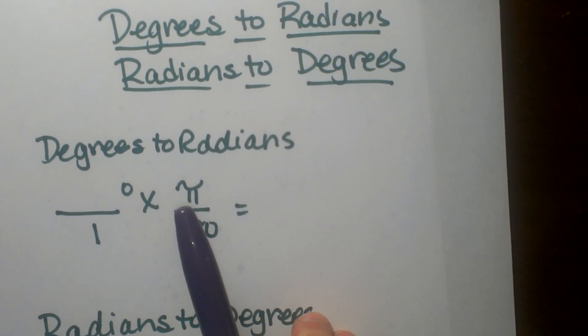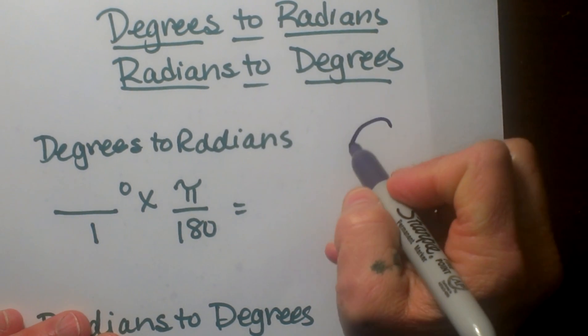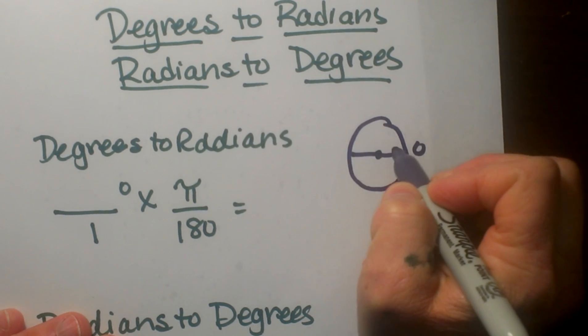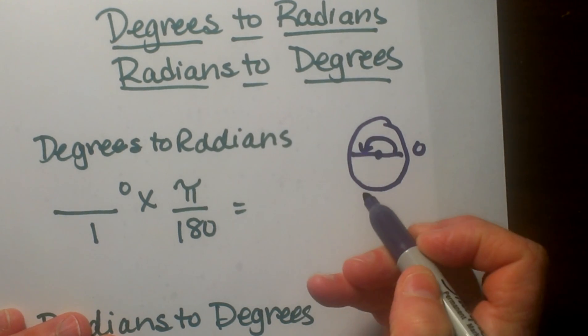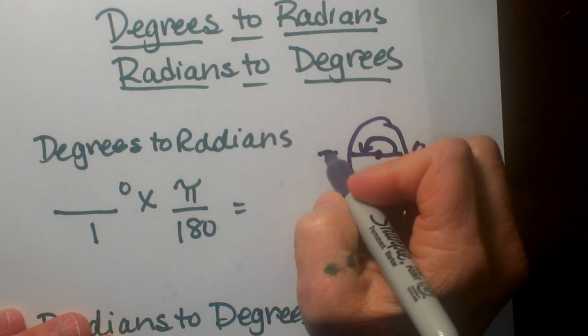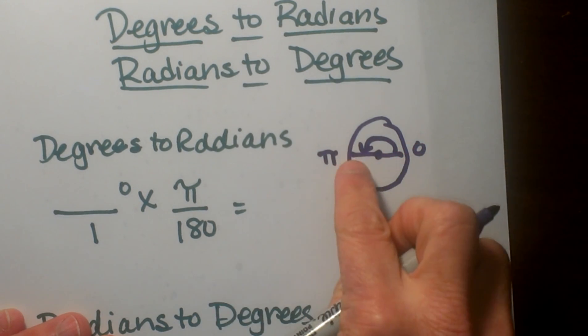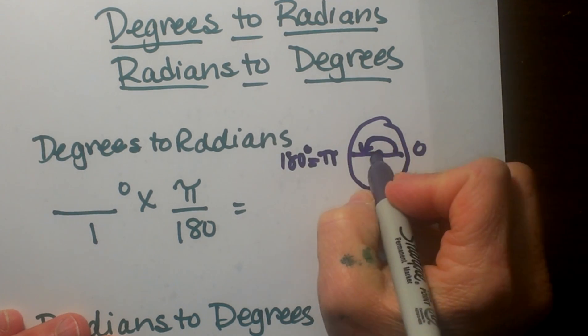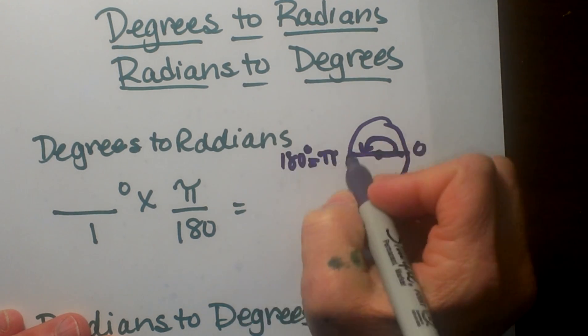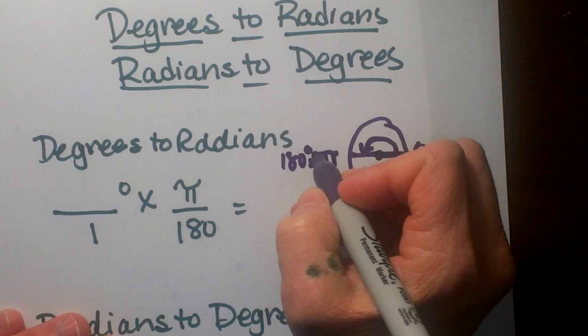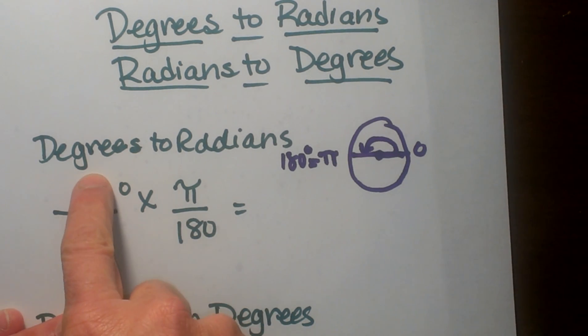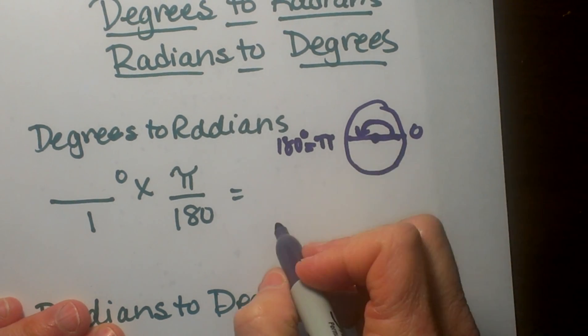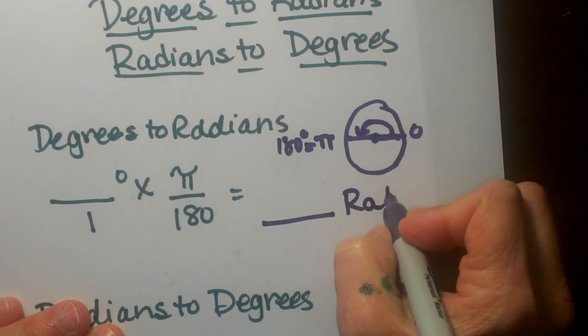When you look at a unit circle you can see that 180 degrees, which is a straight line, that's π in radians, the distance π. But it's also 180 degrees because we know a straight line has 180 degrees. So that's my equal ratio. I'm just taking that and taking my degree times this ratio to convert it, and this will give me my answer in radians.